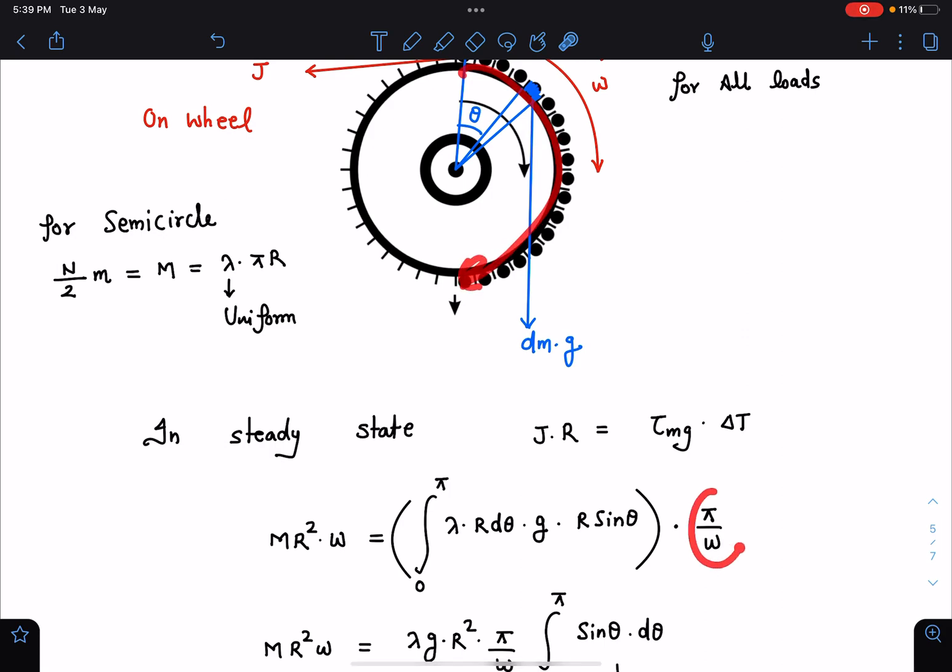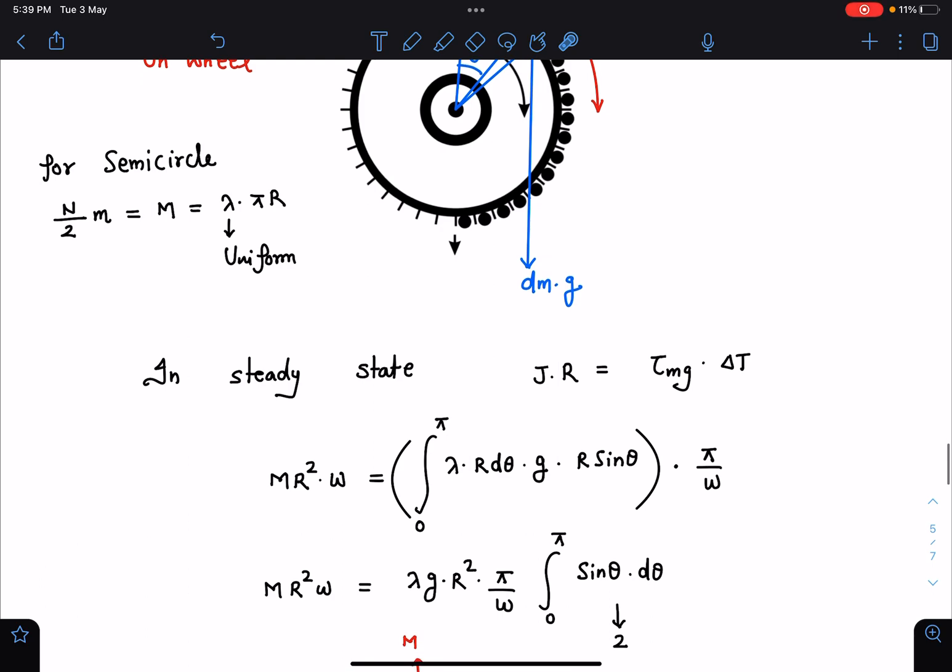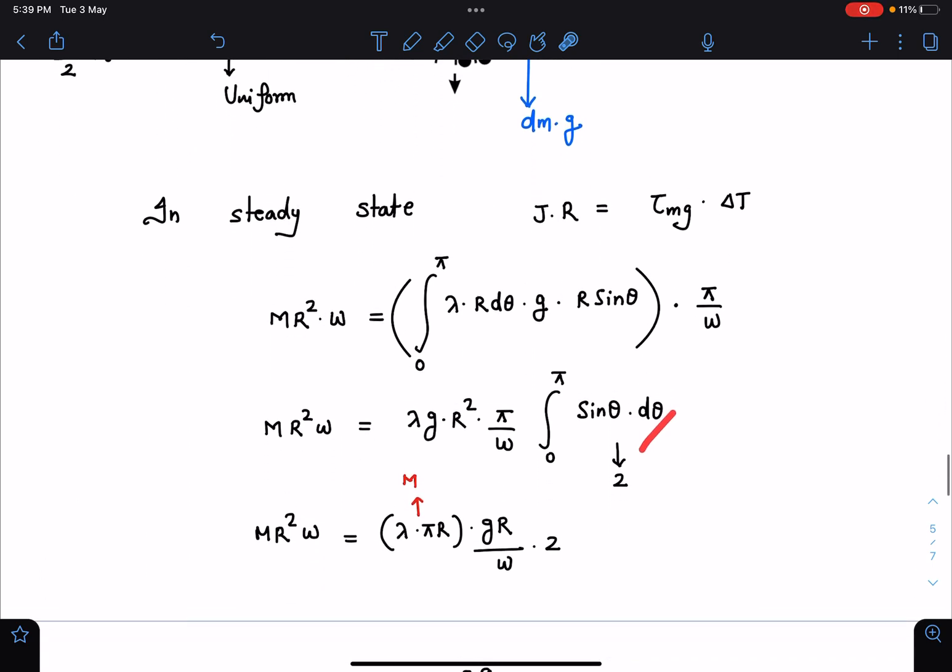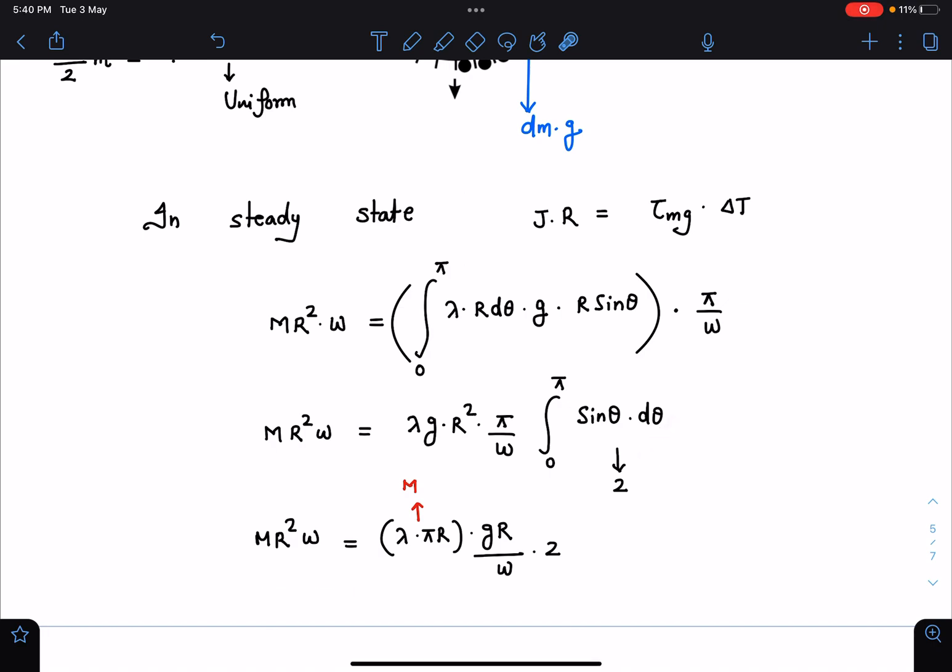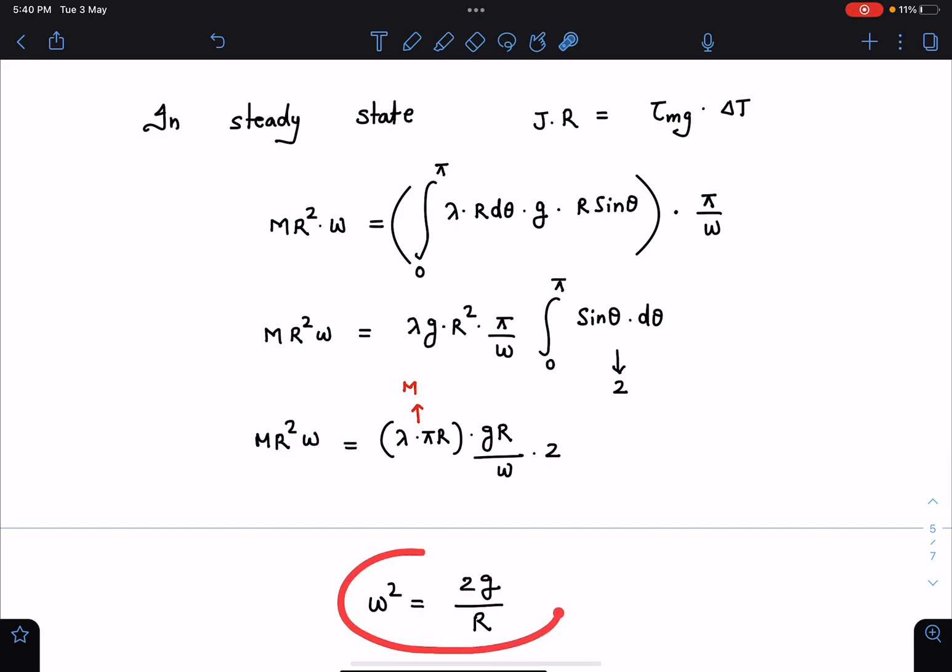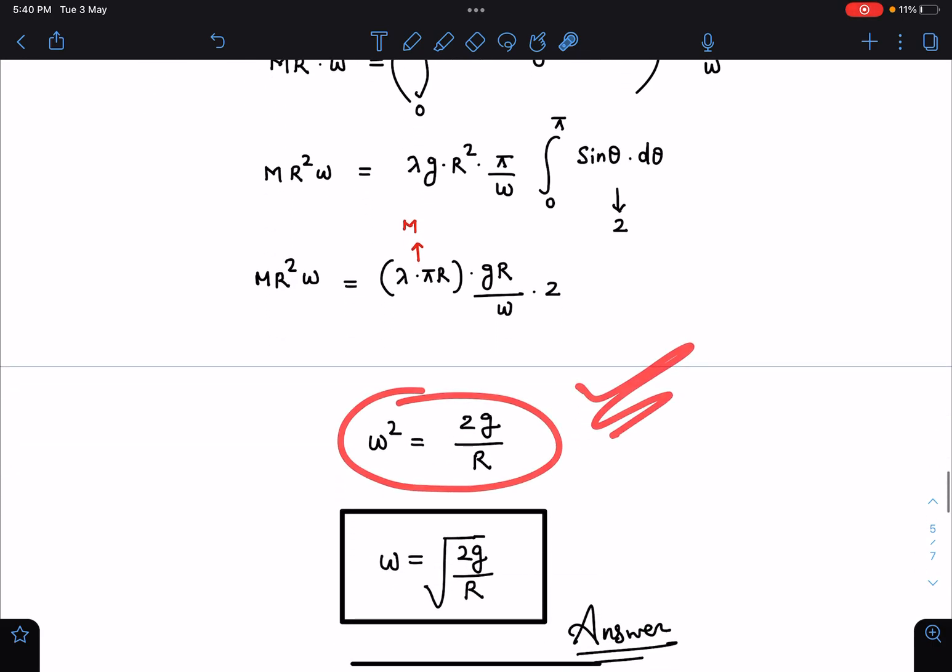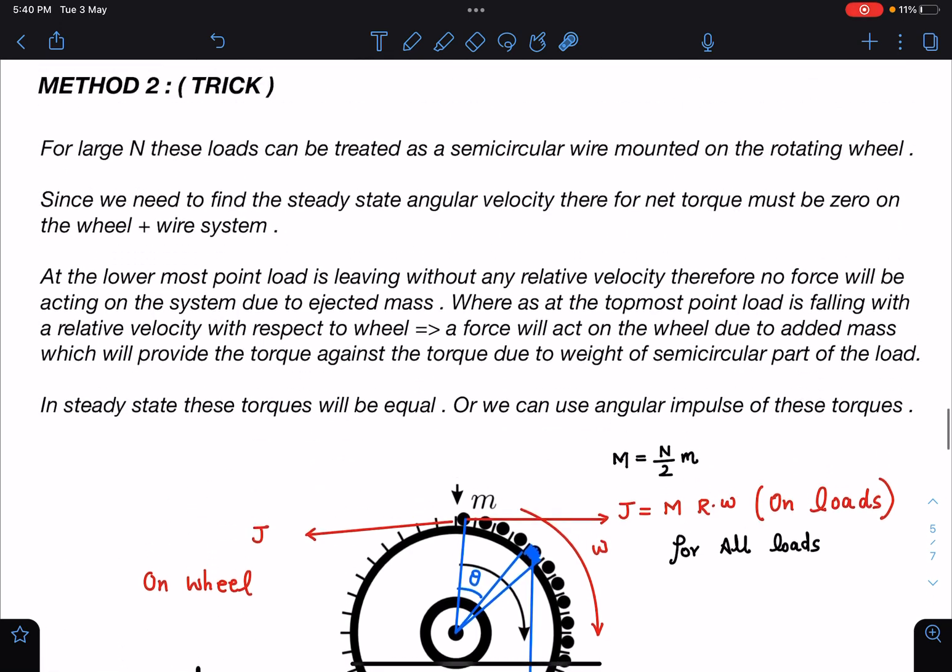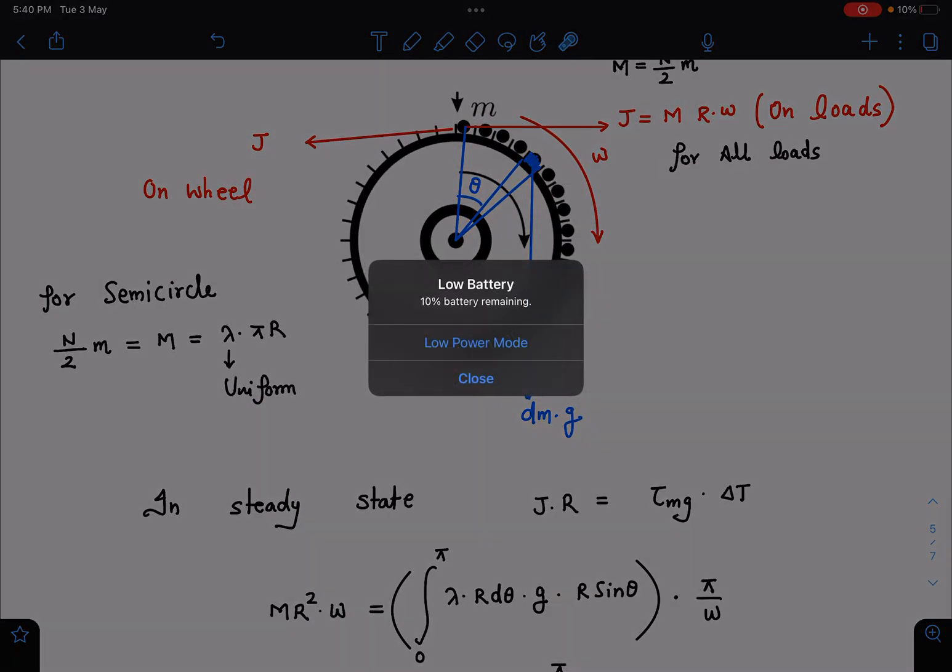When I integrate this very easy integral, it will become, when I substitute the values here, mR square omega, this is equal to, you can see lambda into pi R will become M, and this will become gR/2, 2gR by omega. So let's cancel out m and m, and I'm getting omega square is equal to 2g/R, or you can say omega is root of 2g/R. So you can see this method is very very simple compared to the previous one. Just balance the torques which are acting. One is due to added masses or removing masses, and torque due to weight they must balance each other, and that's it. So I hope you have enjoyed this problem and its solution.